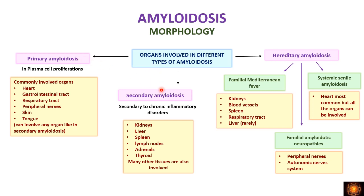Coming to morphology, in different types of amyloidosis different organs are involved. In all types, all organs will be involved in the later stages, but initially specific organs are involved. In primary amyloidosis, caused by plasma cell proliferation seen in plasma cell neoplasms, the most common organs involved are the thoracic organs — the heart, respiratory tract, and the gastrointestinal tract.